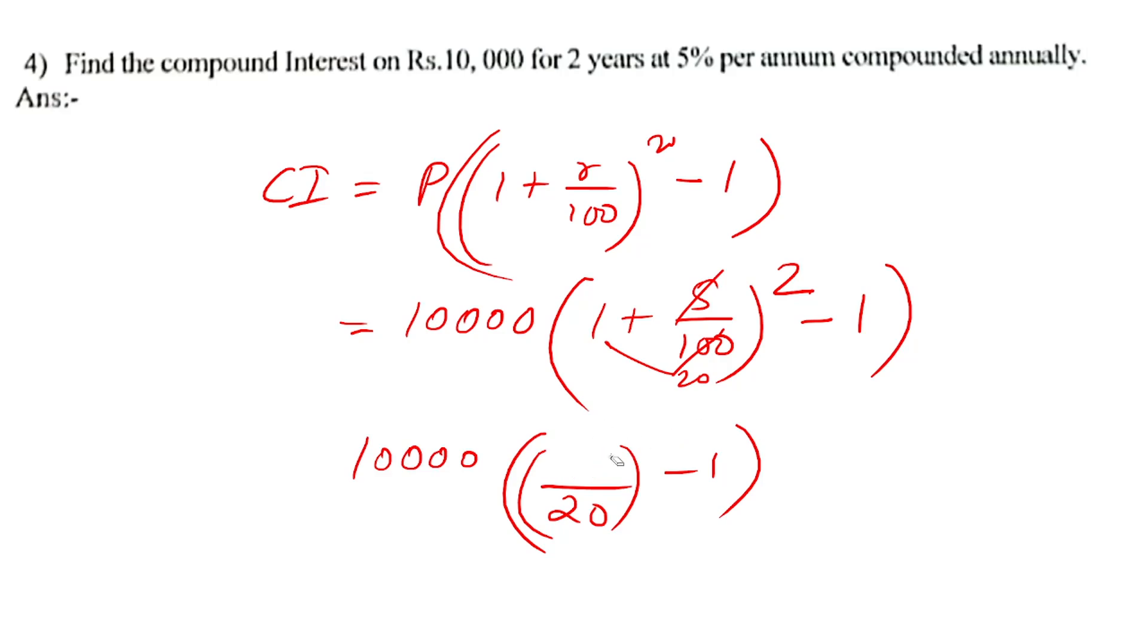Now (21/20) squared equals 441/400. Then the bracket opens: 441 minus 400 divided by 400, which gives 41/400. This gets multiplied by 10,000.